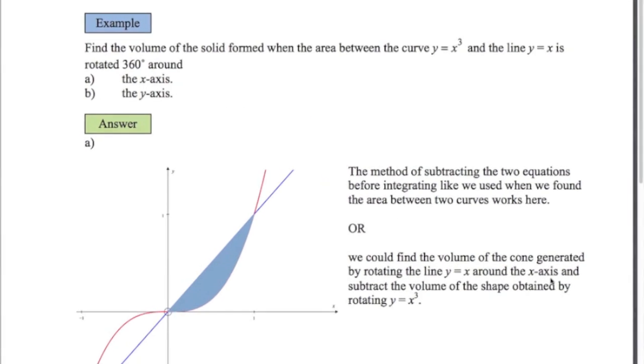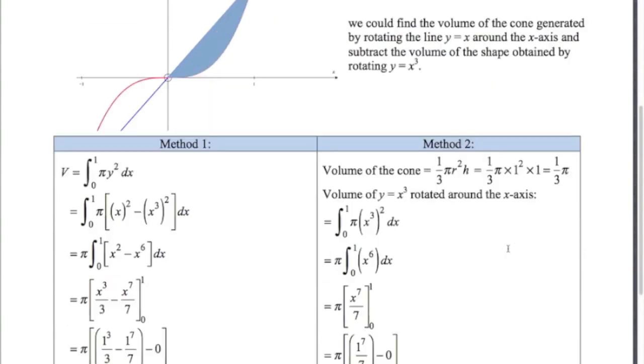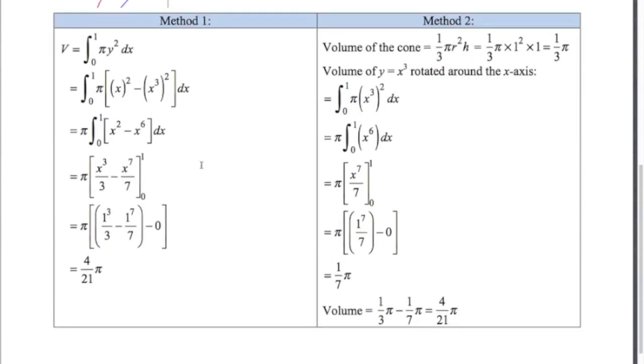There's two ways of doing it. Just like we did when we worked out the area between two curves, we could subtract the two equations before we integrate. The second method is you could find the volume from rotating the blue line around the axis, which produces a cone, then subtract off the volume from rotating the red curve around the X axis. Remember it's always the area between the line or the curve and the axis that gets rotated around. If you subtract those two, you're going to get the volume of this shape.